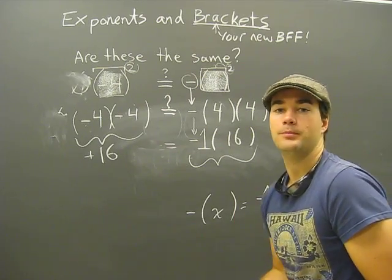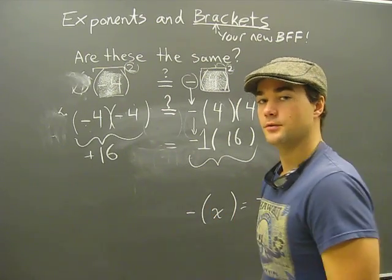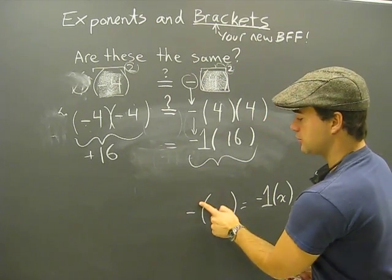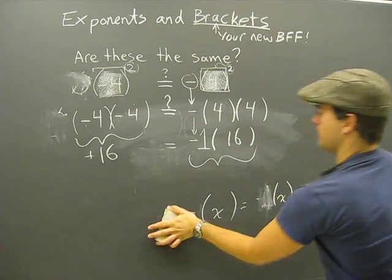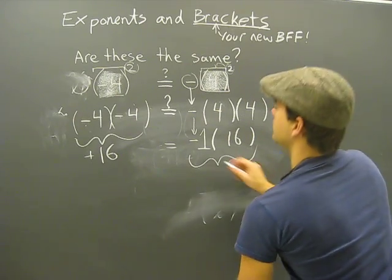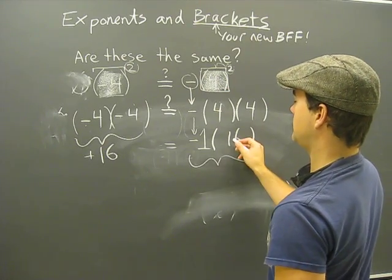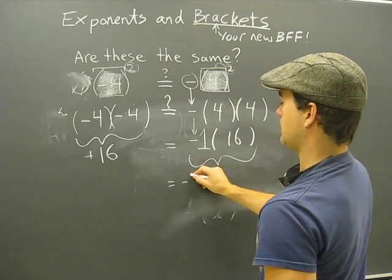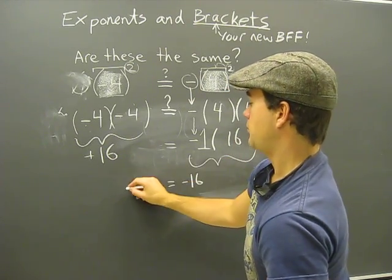We are lazy math people, and we're smart with our shortcuts, which is what I tell you all the time. So we don't need to draw in the 1, so we just ignore it. So where are we at here? Minus 1 times positive 16 equals negative 16. This side was positive 16.